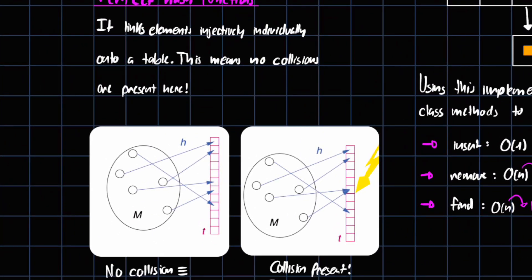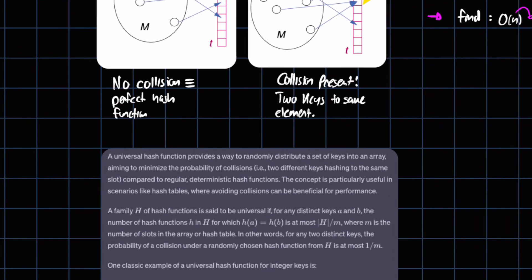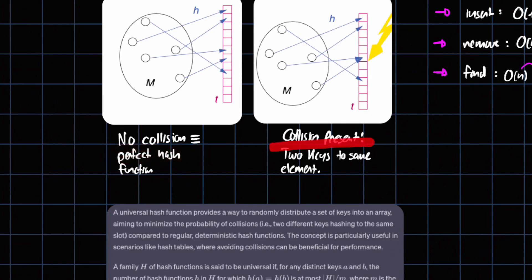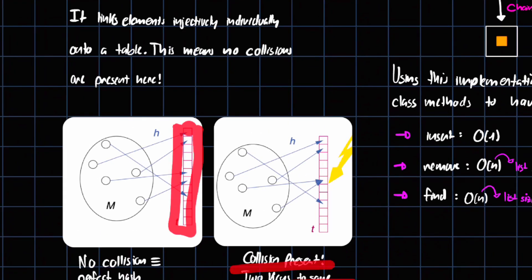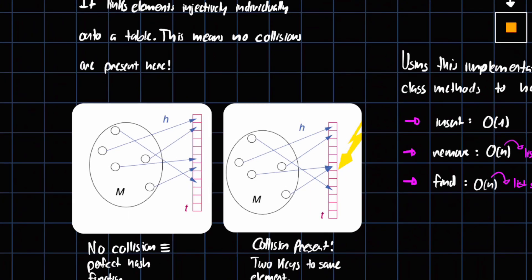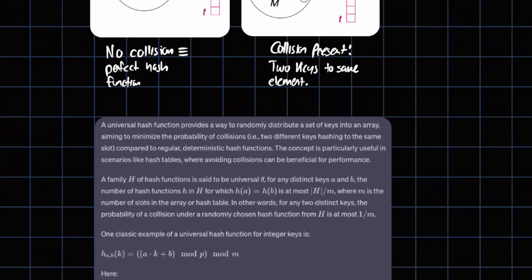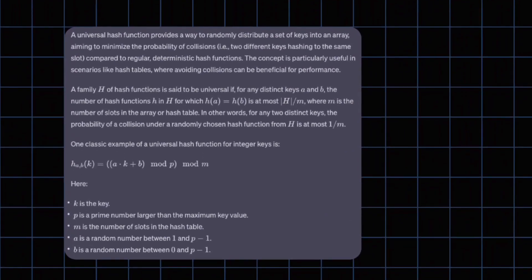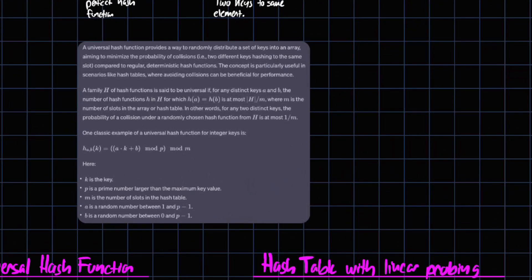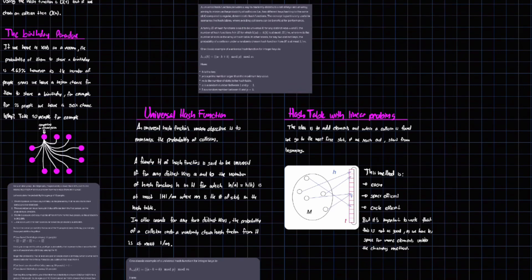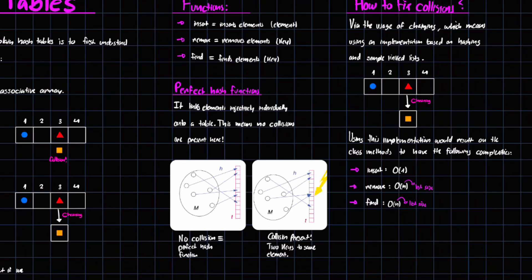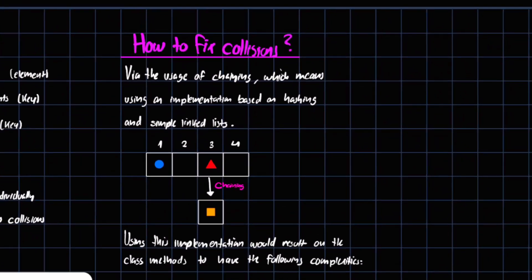A perfect hash function maps elements individually onto a table with no collisions. However, this is mostly theoretical — it's really difficult to find an actual perfect hashing function. From experience, it's almost impossible to find one in practice, and I'll show you why later on. The takeaway: perfect hash functions exist in theory, but they're extremely hard to achieve.